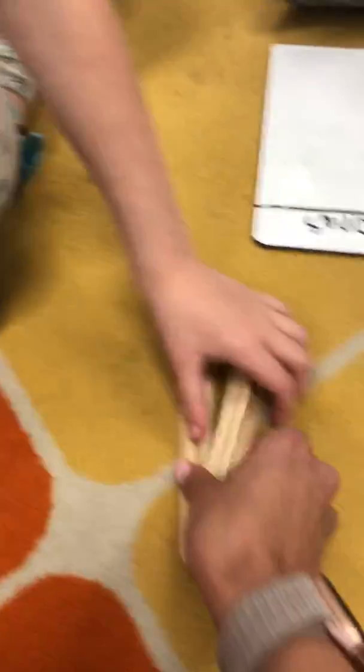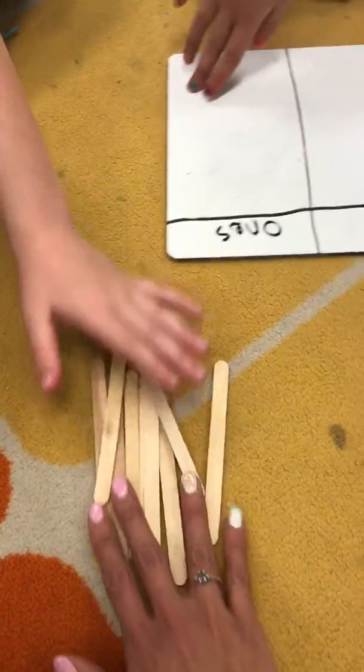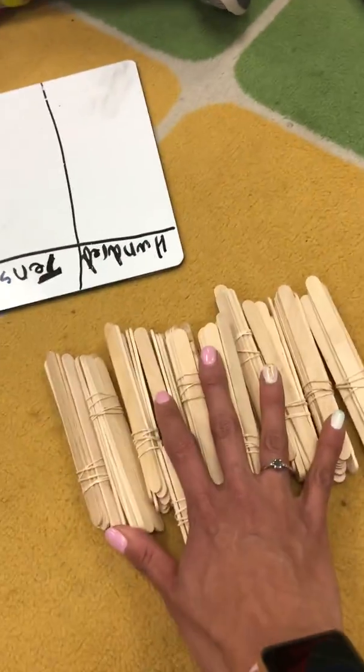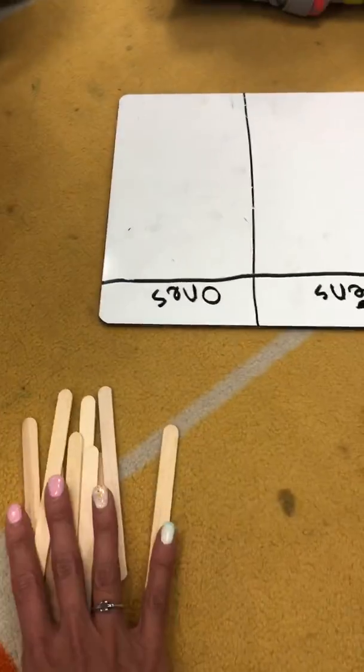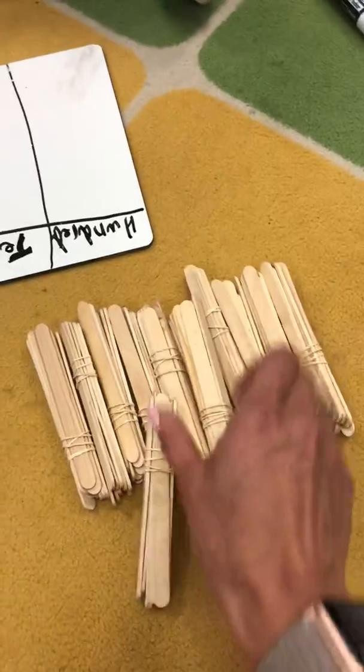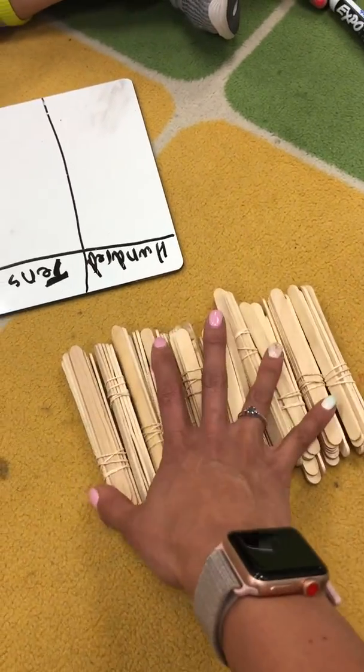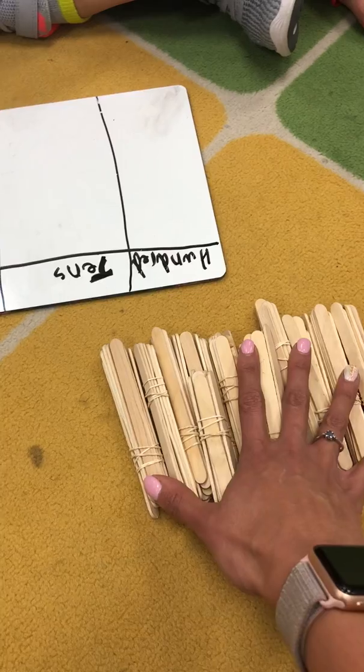And the reason why I did this was to show that when you have 10 you automatically go to another bundle. So that's why there's only nine ones right here. And we used 120 and the reason why is because the standards for first grade is to learn numbers up to 120.